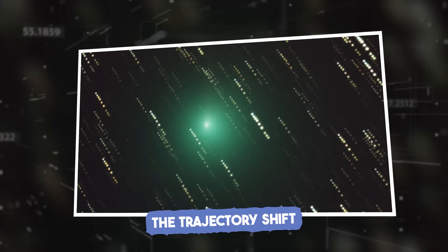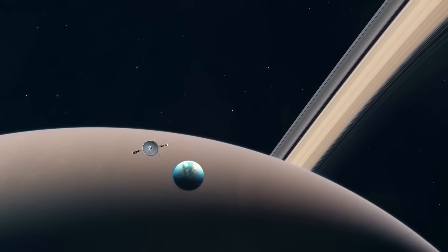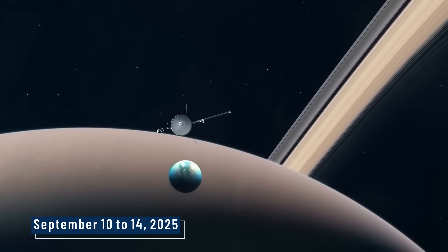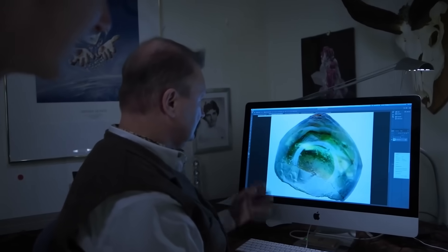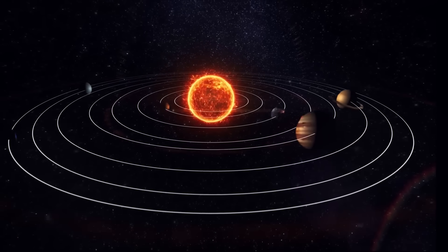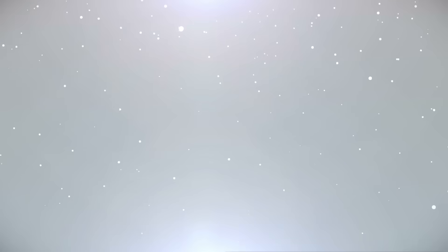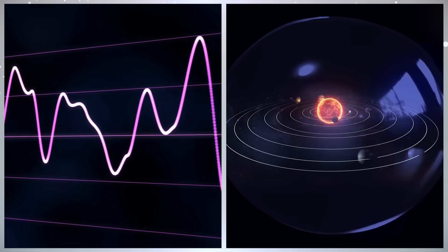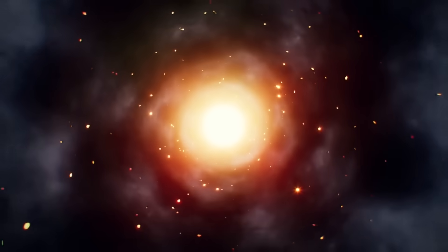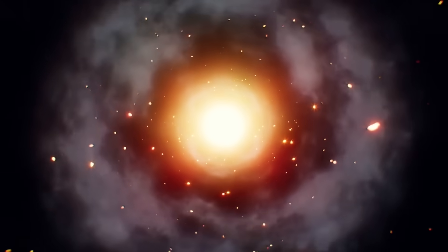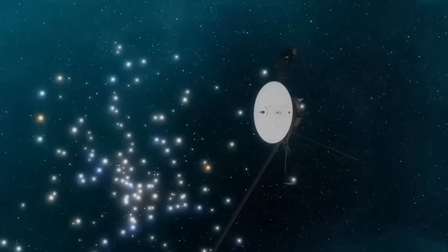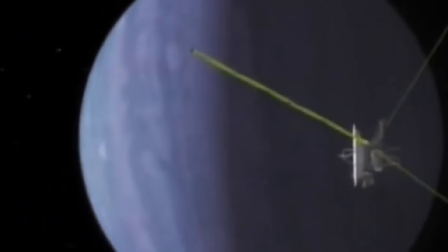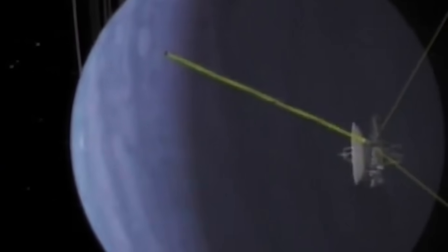When orbital data from September 10th to 14th, 2025 arrived, something was off. Voyager 2's path no longer matched predictions calculated months earlier. At first, deviations were minimal, mere 0.02 degrees. But by week's end, the probe's course had shifted unmistakably inward. The direction aligned toward the incoming vector of 3I/ATLAS.